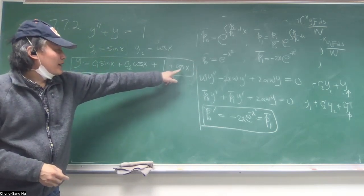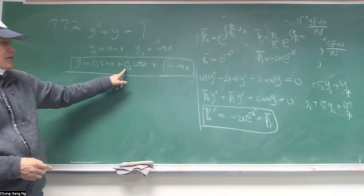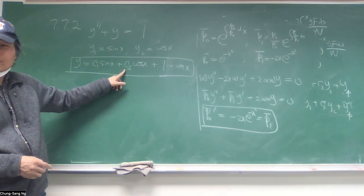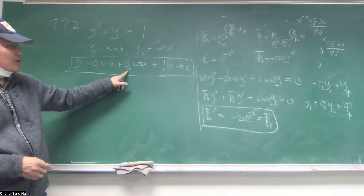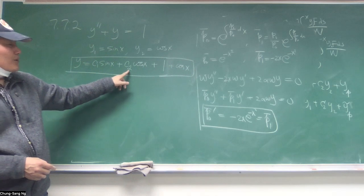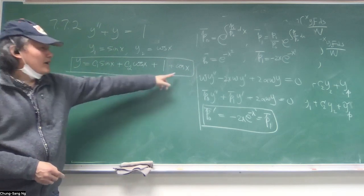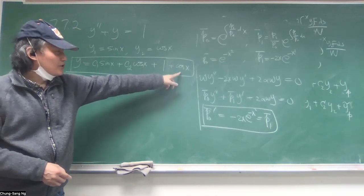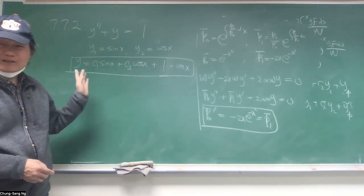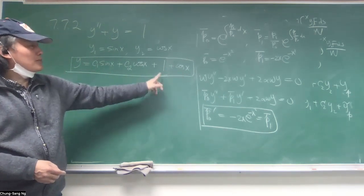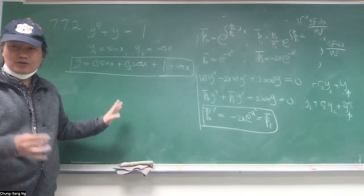Because all you need to do, you can combine this and that and change the coefficient, right? Because this is arbitrary. So you don't have to fix that. Adding any homogeneous solution doesn't matter. So the particular solution part can be non-unique.